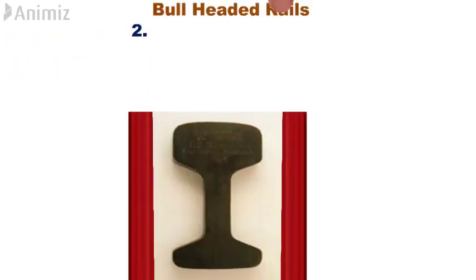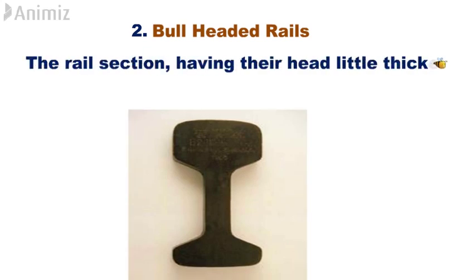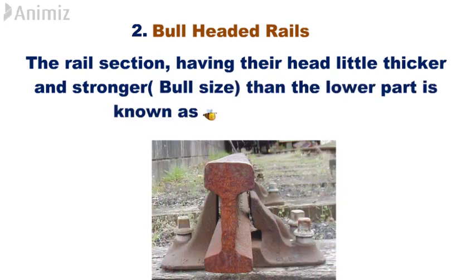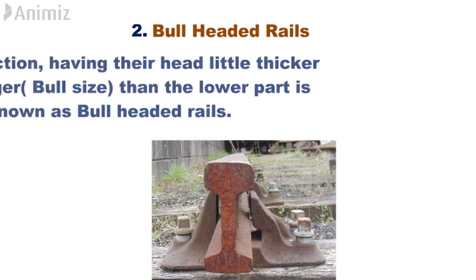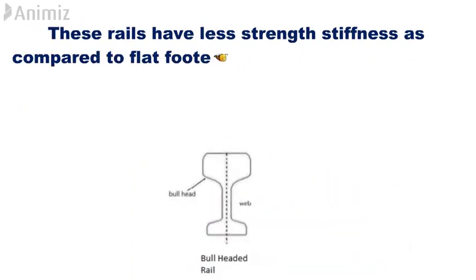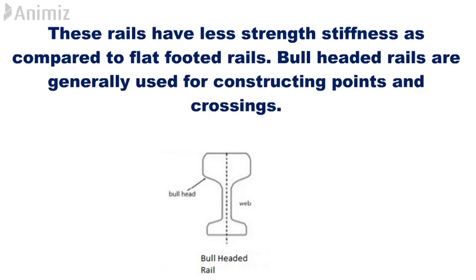2. Bull-headed rails. The rail section having their head a little thicker and stronger bull size than the lower part is known as bull-headed rails. These rails have less strength and stiffness as compared to flat-footed rails. Bull-headed rails are generally used for constructing points and crossings.